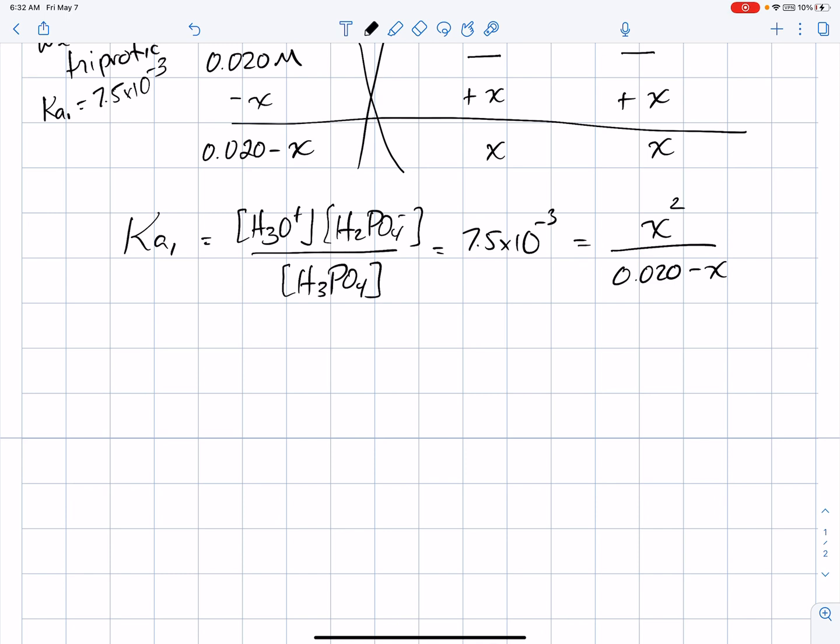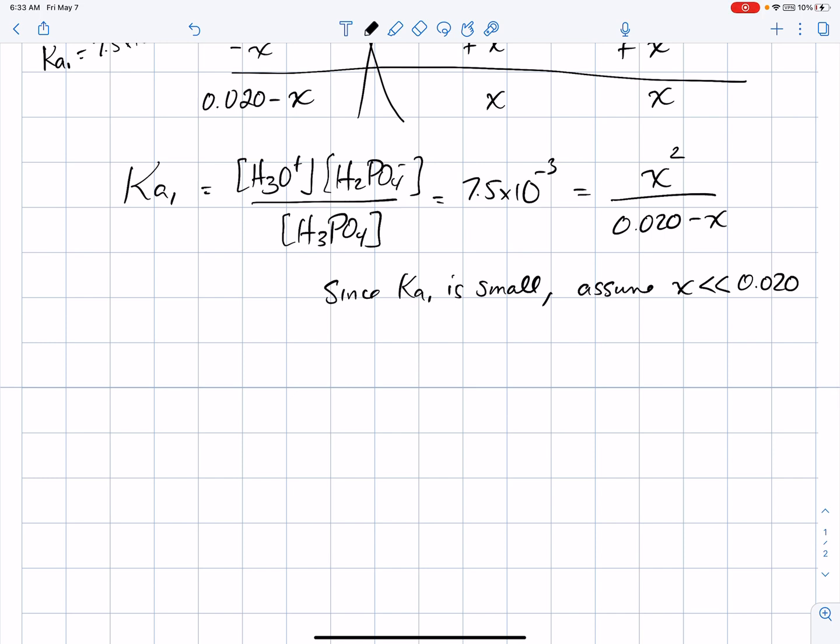Now, if you own a graphing calculator and you want to use your solver feature to solve this equation, go for it. I'm going to use the method of successive approximations. I'm going to say here that since the Ka1 is small, we expect that X is going to be very small. So, we'll assume that X is much less than 0.020. If I make that assumption, then we can now say 7.5 times 10 to the minus 3 is approximately equal to X squared over 0.020. That X in the denominator is much less than 0.02. So, this is what we have.